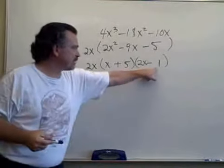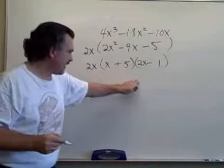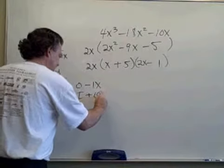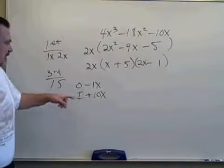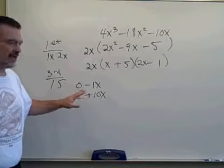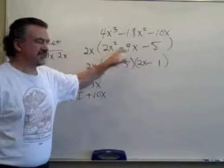x times minus 1 under the O of FOIL is minus 1x. Plus 5 times 2x under the I of FOIL will be plus 10x. Combining those two terms gives me plus 9x. But what did I want? I wanted minus 9x.